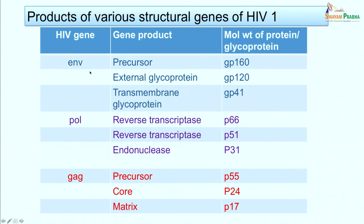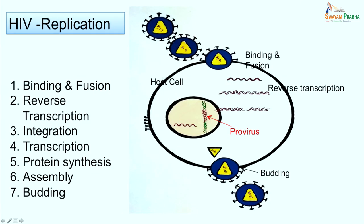The POL gene codes for reverse transcriptase and endonucleases. The GAG gene products include core protein P24, P55, and P17. P24 is very important because it helps in the detection and diagnosis of HIV infection. These gene products — especially P24 — are used as targets in laboratory diagnosis.